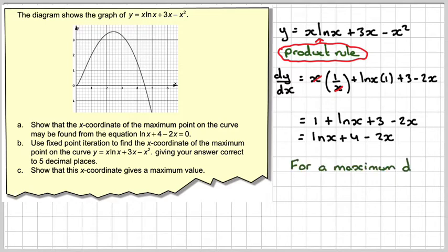For a maximum point, dy by dx will have to be equal to 0. Therefore, ln x plus 4 minus 2x will be equal to 0 as required.